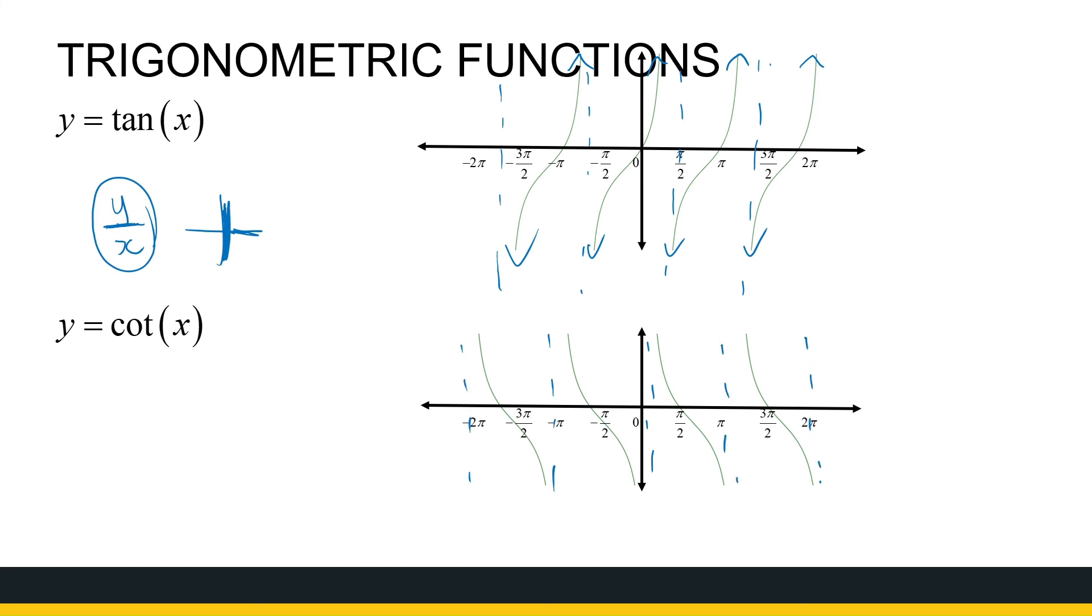So I mentioned periodic—that is how long it takes for a full wave to complete itself. If you look at tan, a full shape completes itself every pi radians. Every pi radians I get a full shape, same with cot. Every pi radians I get a full shape. So that means tan and cot have a period of pi.